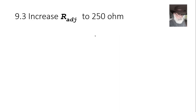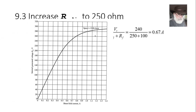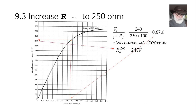Now we increase the adjustable resistor value. Increasing it decreases the field current, which reduces the air gap flux, and according to our lecture material that speeds up the machine. With the adjustable resistor set to 250 ohms (up from 175), the field current drops to 0.67 amperes. Going to the magnetization curve with that value, the reference voltage at 1200 RPM is 247 volts.